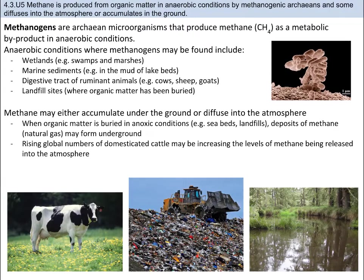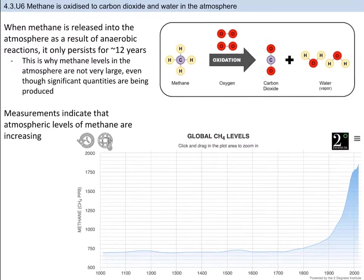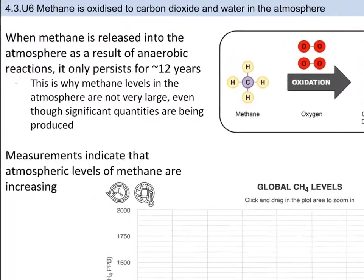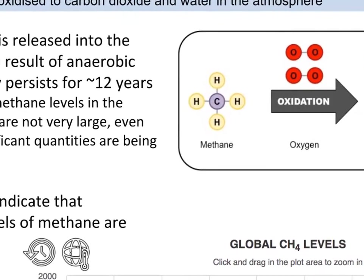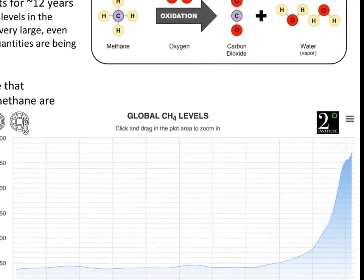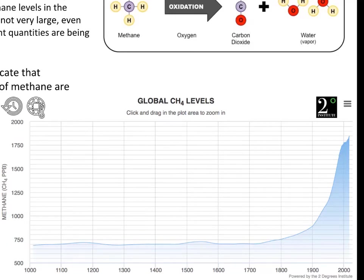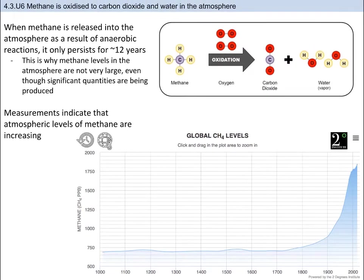Does methane just leave the carbon cycle? No — when methane is released into the atmosphere as a result of anaerobic reactions, it persists for roughly 12 years. Methane will be naturally oxidized to form carbon dioxide and water, or it can be combusted with the same outcome. This is why methane levels in the atmosphere are not very large, even though significant quantities are being produced. However, since the Industrial Revolution, human sources of methane emissions have been growing: fossil fuel production, livestock farming, landfills and waste, biomass burning, and biofuels. Keep this in mind as methane is also a greenhouse gas.